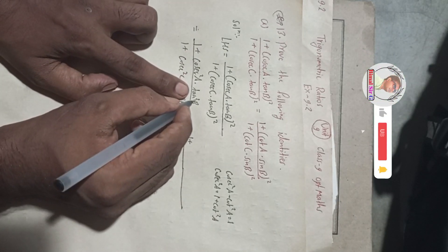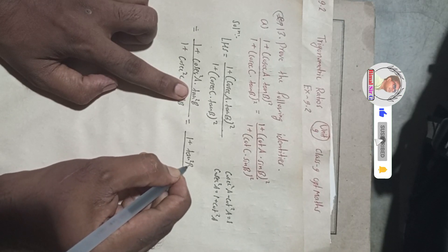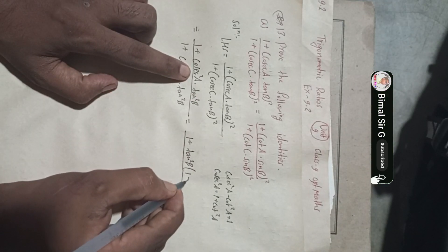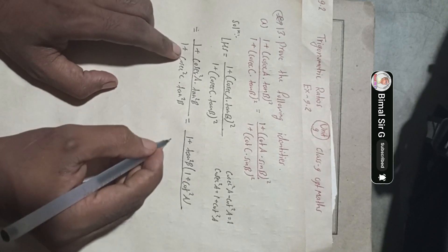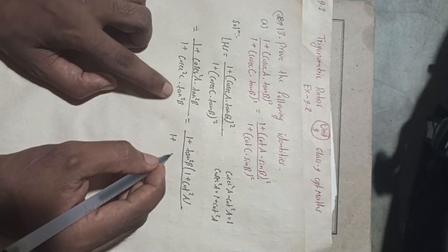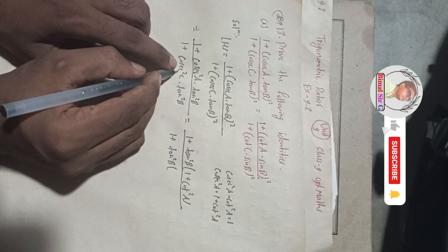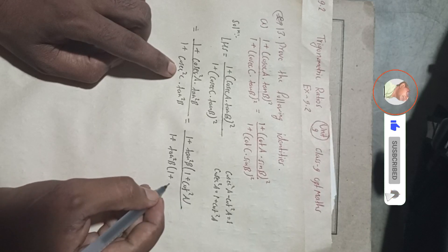I will write tan²B first, then substitute cosec²A = 1 + cot²A. So the numerator becomes (1 + tan²B)(1 + cot²A). Similarly in the denominator, (1 + tan²B)(1 + cot²C).